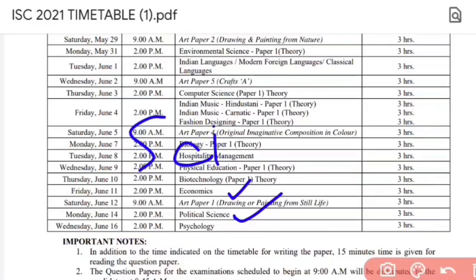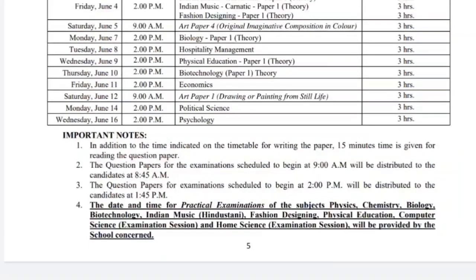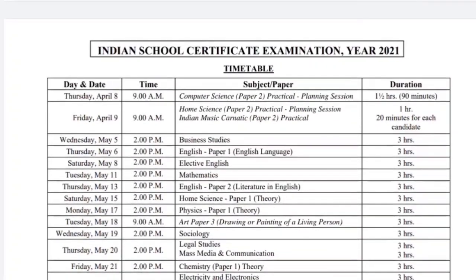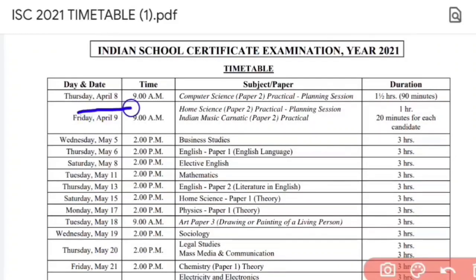We have discussed the whole timetable. You can see here that on May 5th the theory paper starts with BST as the 1st paper, then English is 6th of May, and it continues from there. You can also see dates in April — 8th and 9th of April — which may be confusing for some students.